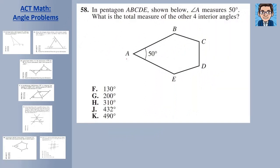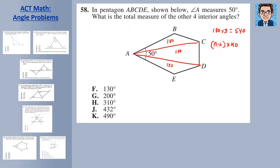In this problem we have a pentagon and are told one angle is 50 degrees, and we need to find the total measure of the other four angles. A pentagon can be divided into three triangles, so 180 times 3 equals 540. Using the formula (n − 2) × 180: 5 minus 2 times 180 is also 540. So 540 minus 50 gives us 490 for the other four angles. Answer K.